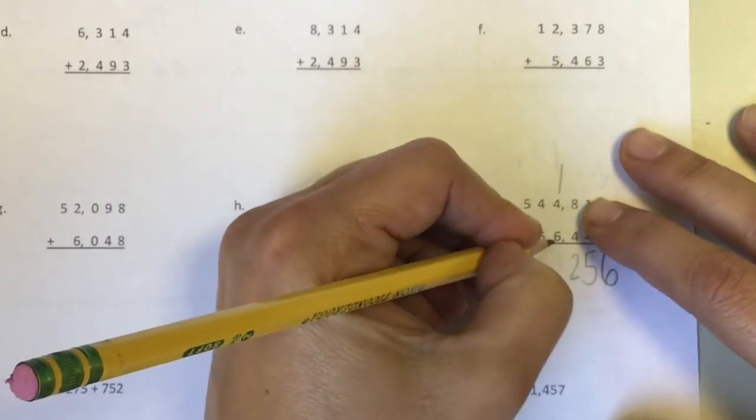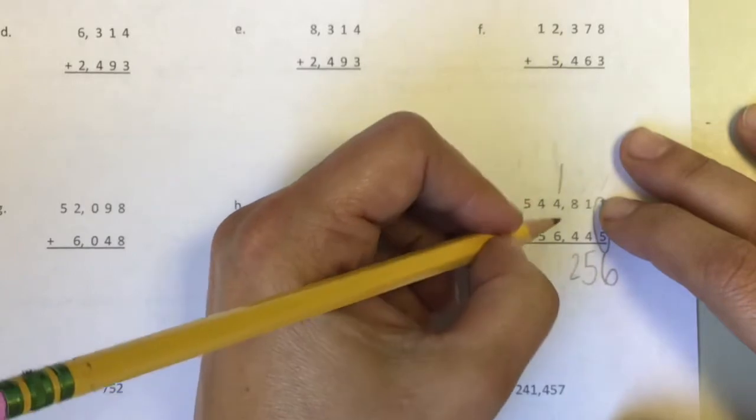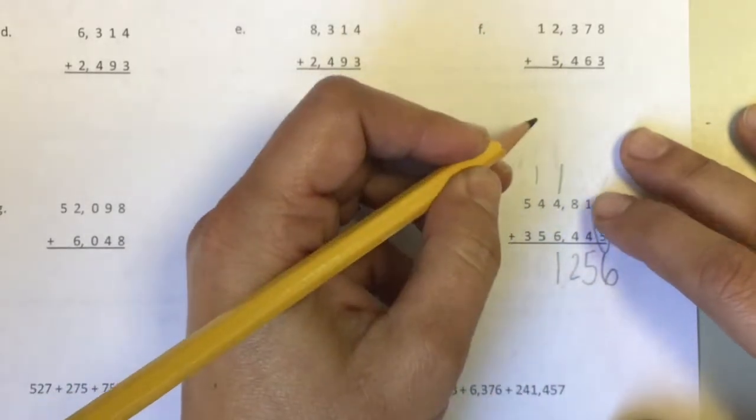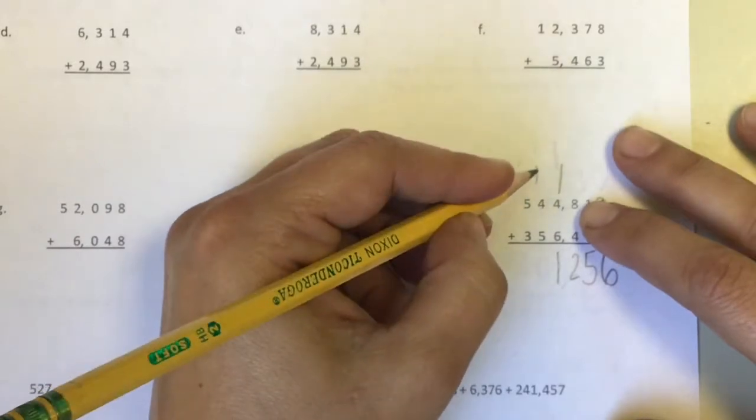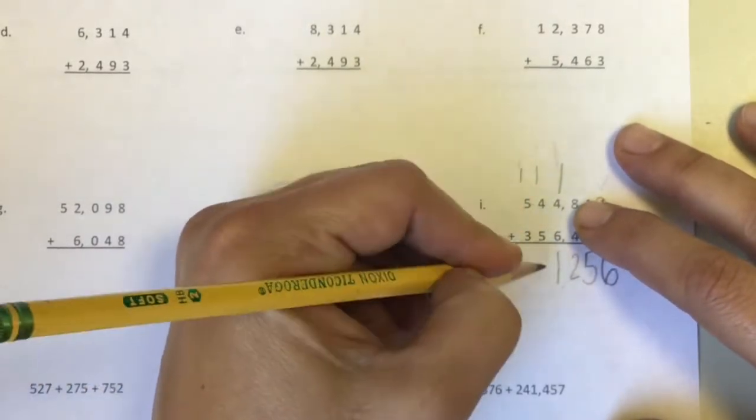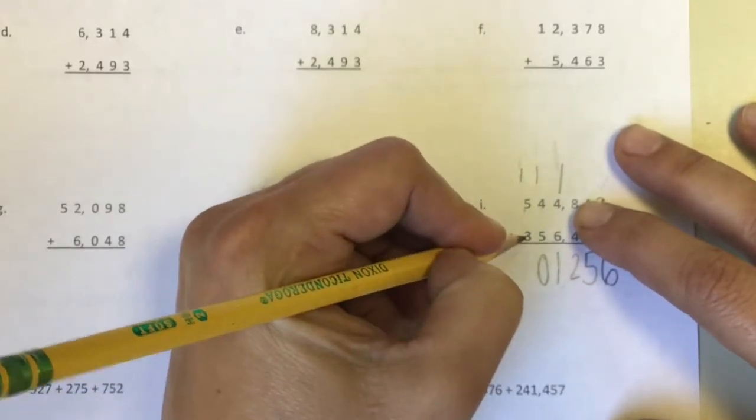So now I have 1 plus 4 plus 6, what would that be? 11, hope you were thinking that too. 1 plus 4 plus 5, well that's going to be 10. 1 plus 5 plus 3.